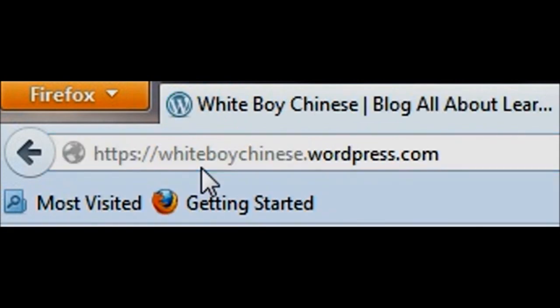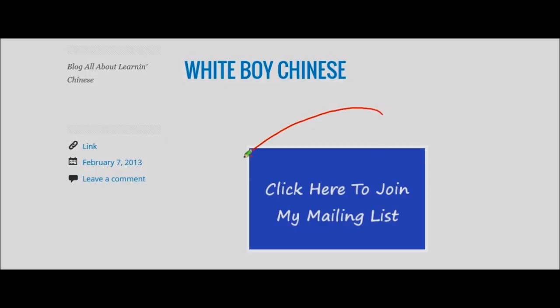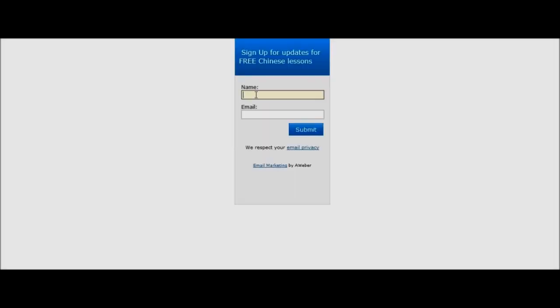When you get to my website, you'll see a big blue box. Click on the box, and you'll see a form. Fill it out, and it'll put you on my mailing list. Once you're on my mailing list, I'll personally send you the Chinese Tones Decoded lesson straight to your inbox. All right, I'll see you there.